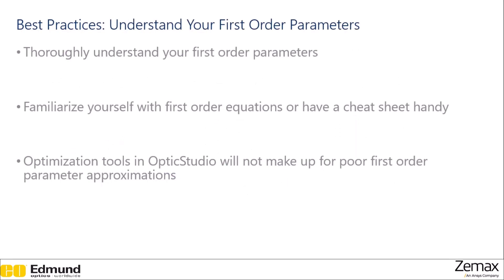Also, before you start, you should thoroughly understand the first order parameters of your system. Familiarizing yourself with the first order equations or having a cheat sheet handy will save you a lot of time in the long run. It's good to know your first order parameters because no matter how much you optimize with tools in Optic Studio, it will not make up for a design that does not have a good set of first order parameters.